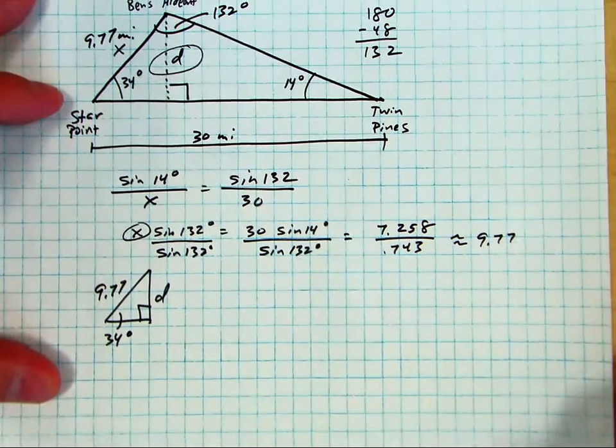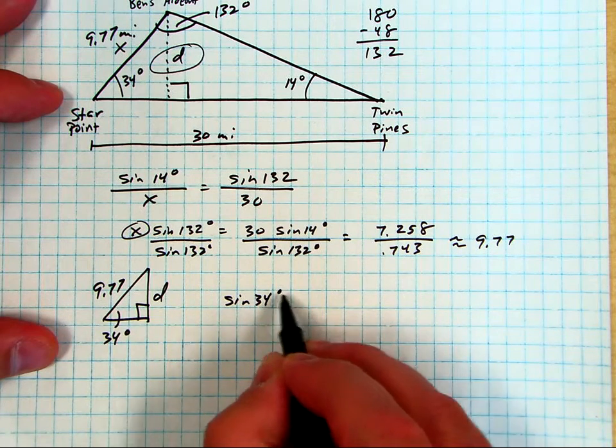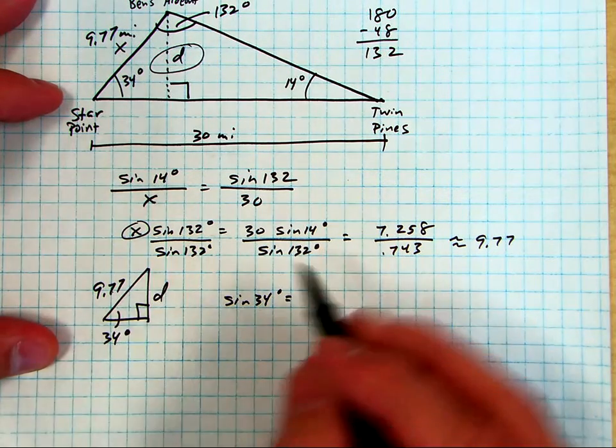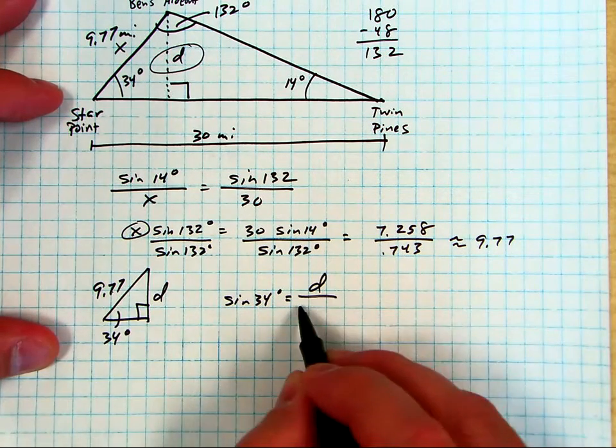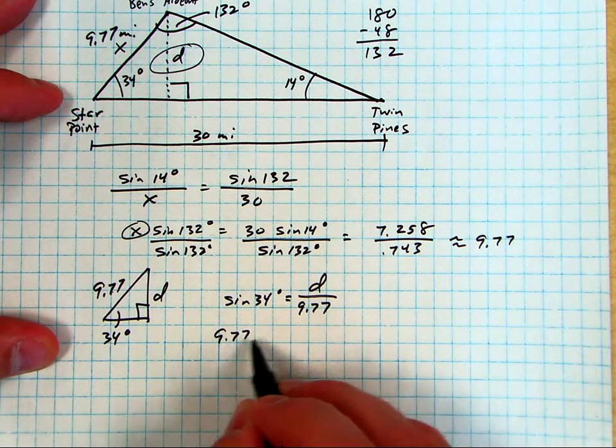So now we're going to use the sine of 34 degrees equals opposite over hypotenuse, distance over 9.77. And we multiply 9.77 to this side.